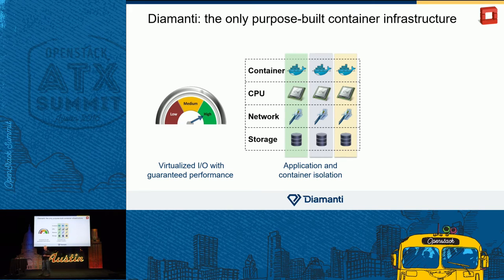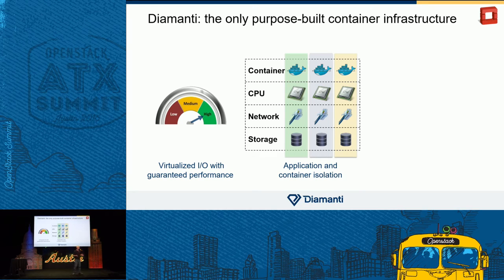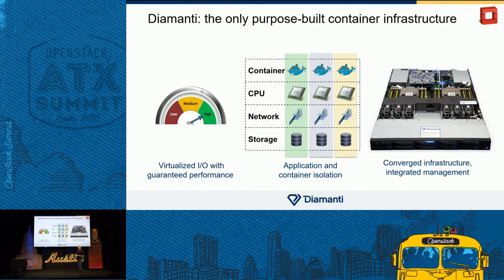We provide isolation for network and storage in the same concept as how your container runtime — Docker, Rocket, for example — provides isolation from CPU, memory, and a process perspective. We bring I/O into a first-class citizen so you can deploy your containers and know you're going to get the resources you require. We package our product as a converged infrastructure appliance that we cluster together for high availability and linear, scalable performance. Come by our booth and we'll show you exactly how it works.